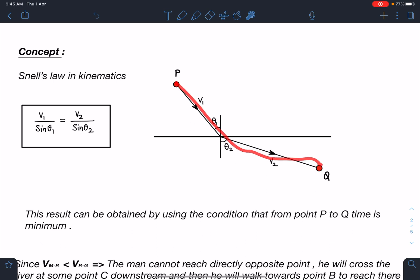If in this medium velocity is V₁ and in this medium velocity is V₂ with respect to the medium here, and this angle is θ₁ and this angle is θ₂, then we can say Snell's law here is V₁/sin θ₁ is equal to V₂/sin θ₂. You can obtain this result using the condition that from point P to Q time is minimum, which follows the property of light rays, or we can call it in other words Fermat's principle as well.